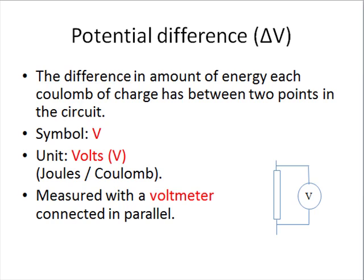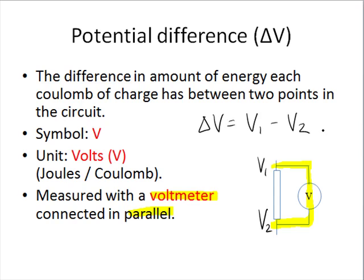We can't really measure potential, but we can measure potential difference using a voltmeter. A voltmeter must always be connected in parallel across the component. One arm connects to one point, the other to the second point. The voltmeter measures how much energy each coulomb of charge has at each connection, subtracts one from the other, and tells you the difference in electrical energy per coulomb between the two points.